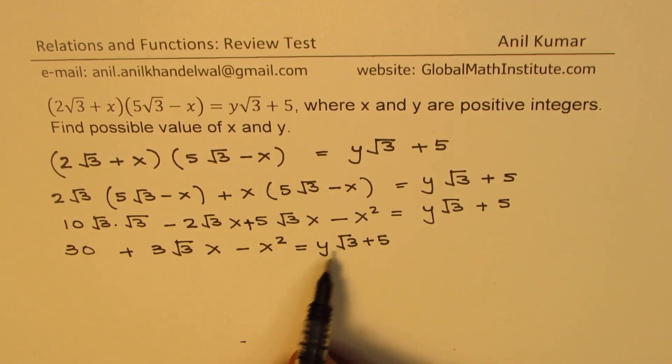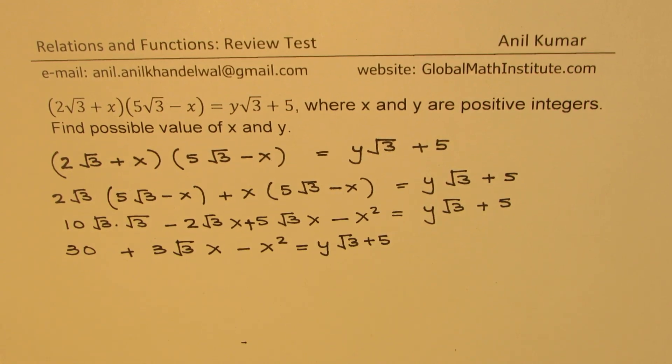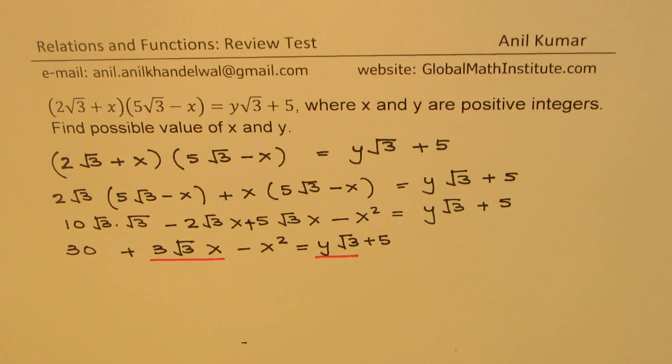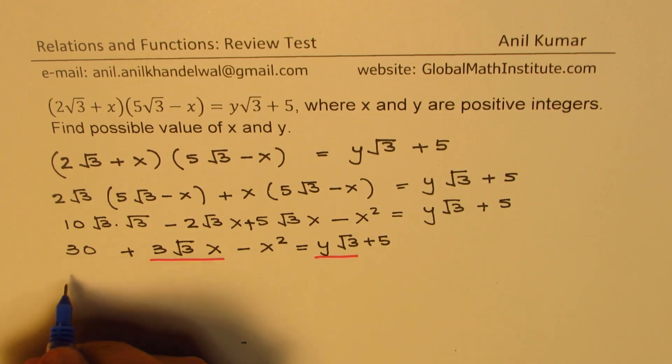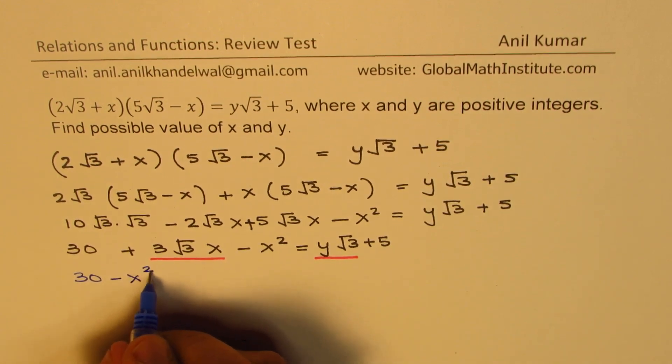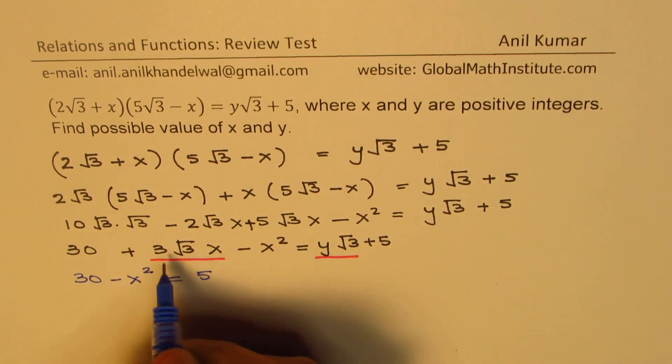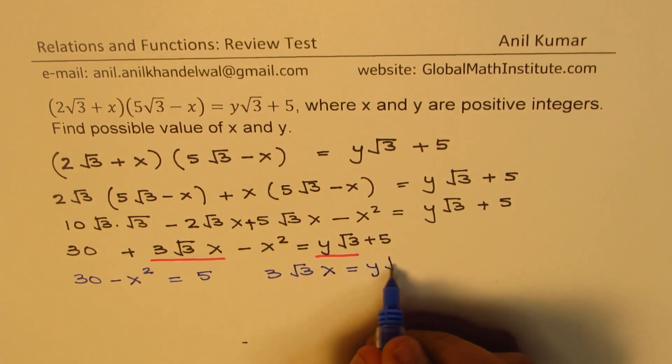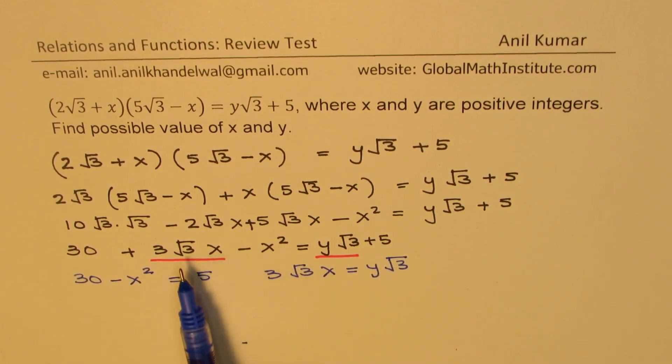Now you have only one equation and two unknowns. How do we solve such equations? So at this stage, what we can do is we can look into the like terms, right? So these are the like terms with √3, correct? So we can equate these terms and also we can equate the other terms which are constants, kind of different types. So we get two equations from here. One equation we get is 30 - x² = 5. And the other equation which we can write is 3√3x = y√3. Do you see what we did? So we equated the √3 terms together and rest of them together, getting two different equations.